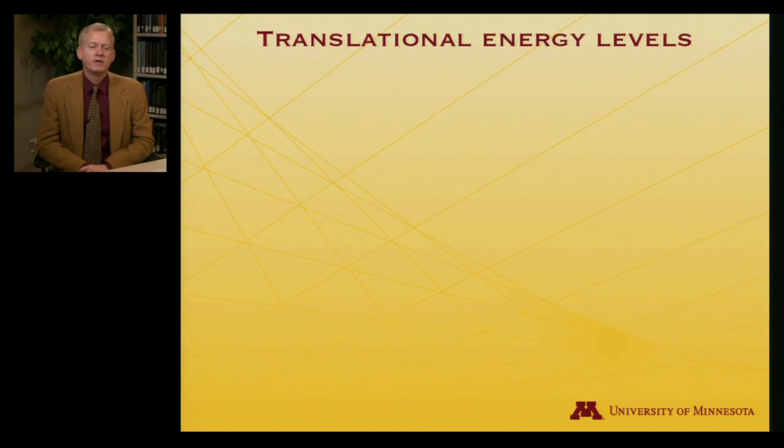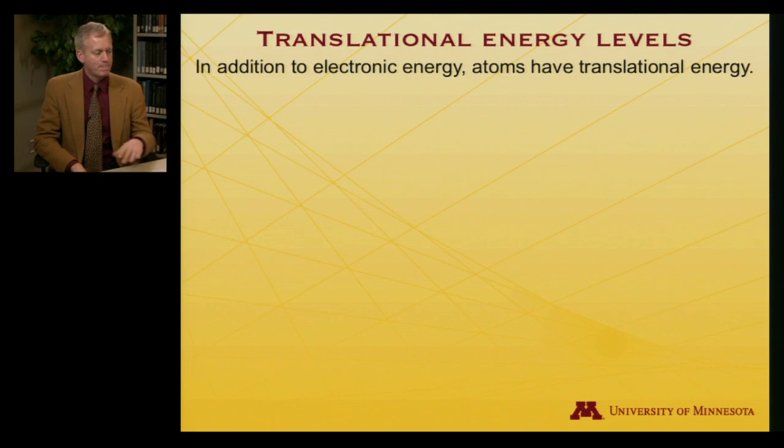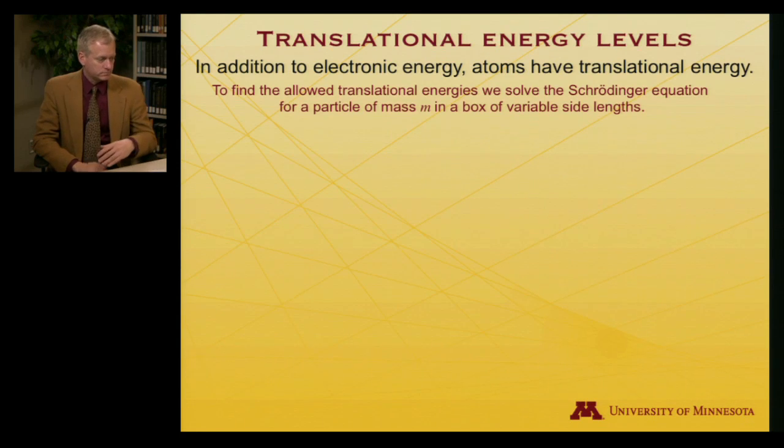Translational energy. So that's the other energy available to an atom. It's moving through space. It has kinetic energy. So how do we go about computing that? We construct a Schrödinger equation, and the equation has to do with a particle of mass m constrained in a box having variable side lengths.